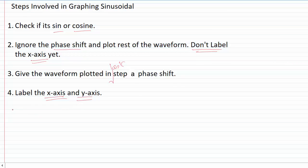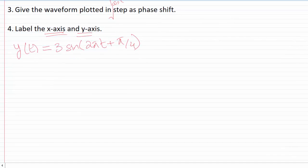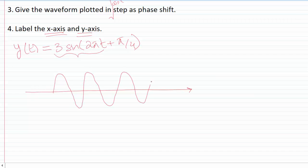Let me do one more example to clarify this concept. I'm going to plot y(t) = 3sin(2πt + π/4). As the first step, I plot just 3sin(2πt) and ignore the phase shift. Since it's a sine waveform, I start from zero. I put my origin here, extend the waveform, and don't label the x-axis yet.